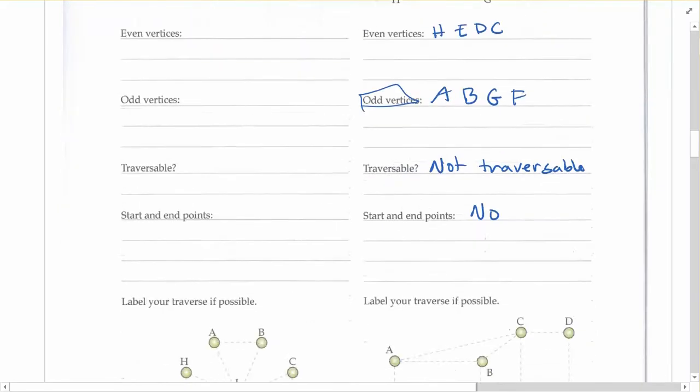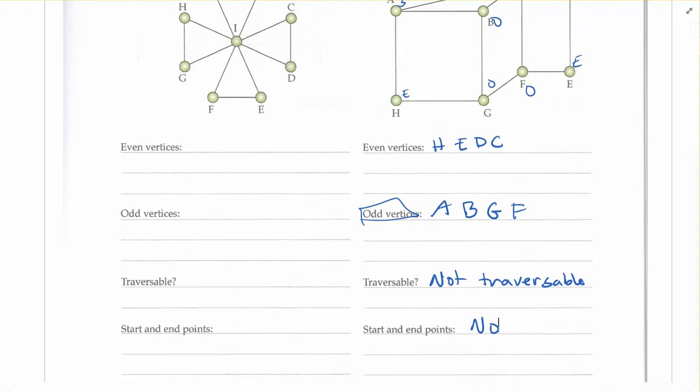So that's the information you're looking for. If you've got two odd vertices, it can be traversable and it would be an Euler path. If you've got no odd vertices, it can be traversable, it's an Euler circuit. In any other circumstance, it'll not be traversable.